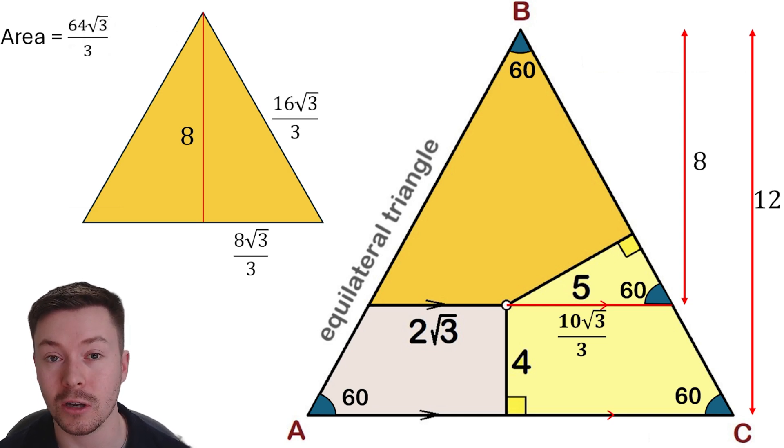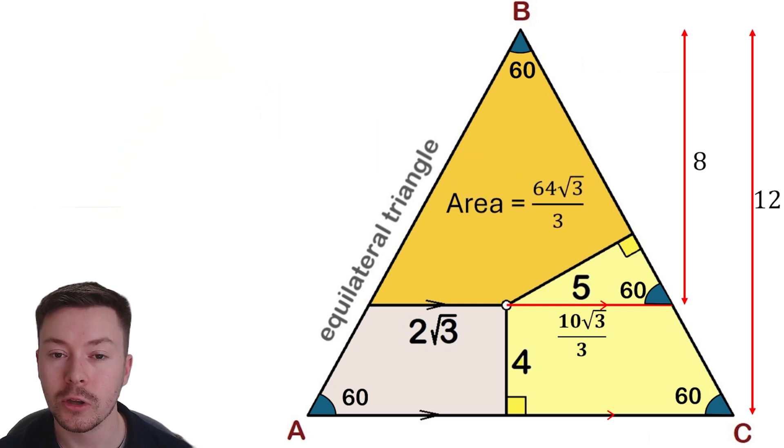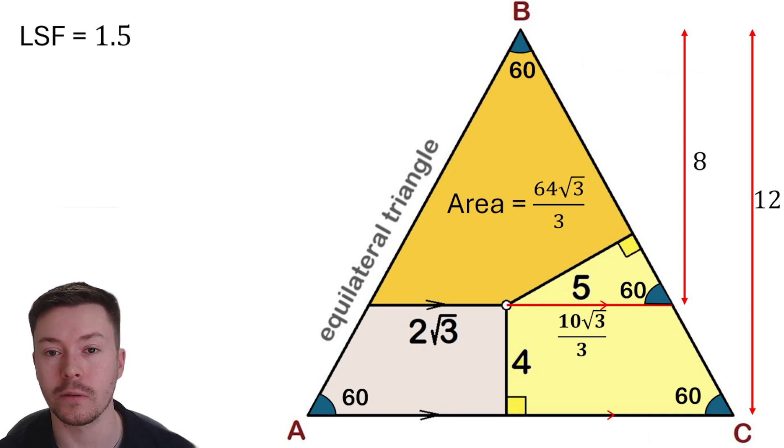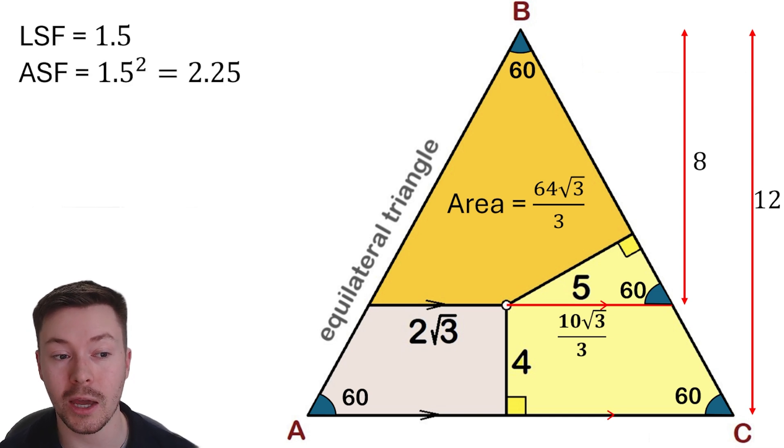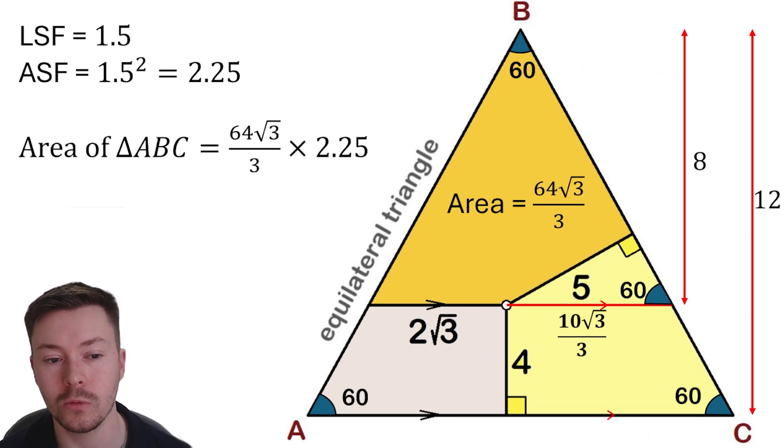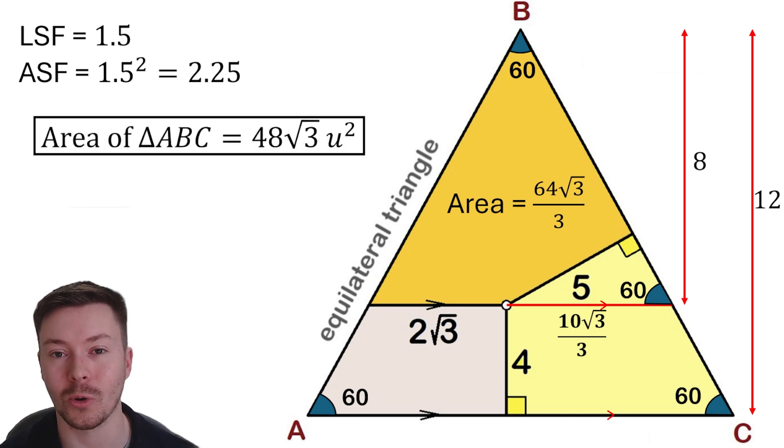Using our scale factors, the length scale factor is 12 divided by 8, so 1.5. 1.5 times 8 gives us the 12, but we are dealing with areas so we need the area scale factor, and that's going to be 1.5, your length scale factor squared, so 2.25. So if we now times the area of our smaller triangle by our scale factor 2.25, we will get the area of the triangle ABC, which is 48 root 3 units squared.